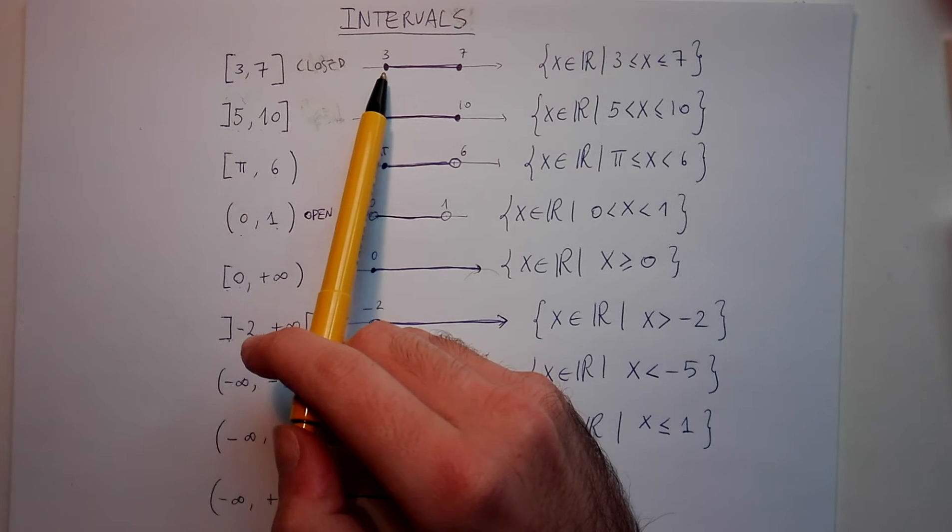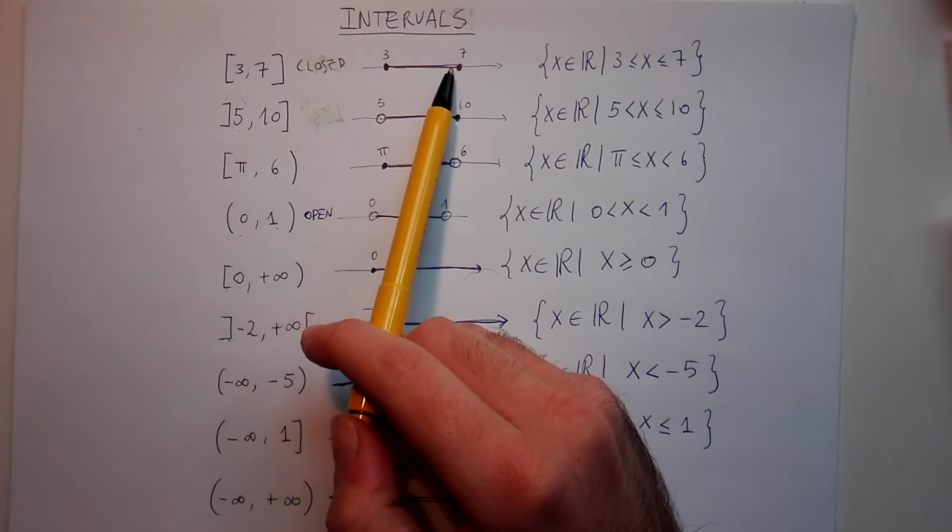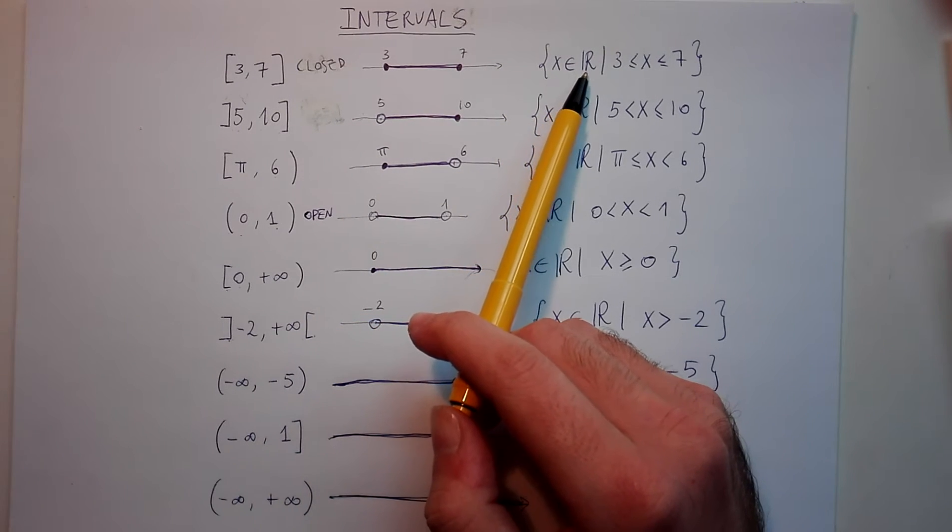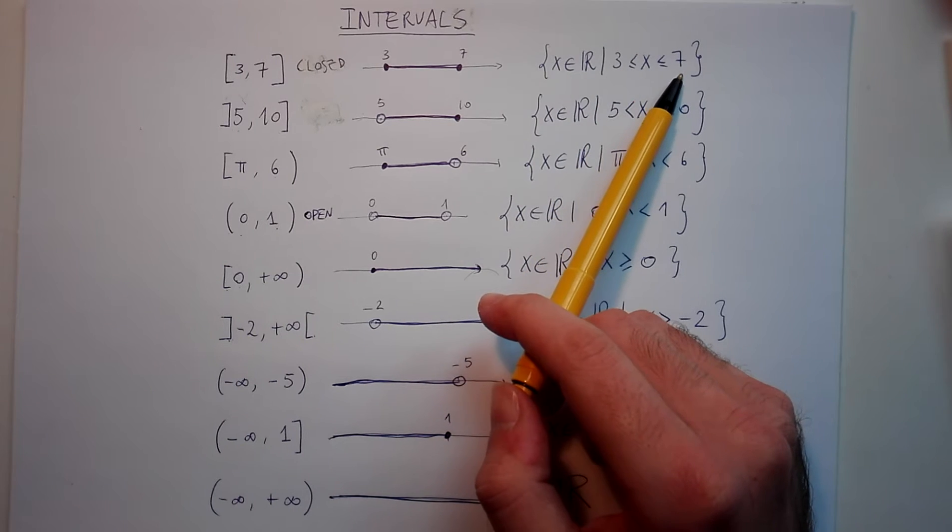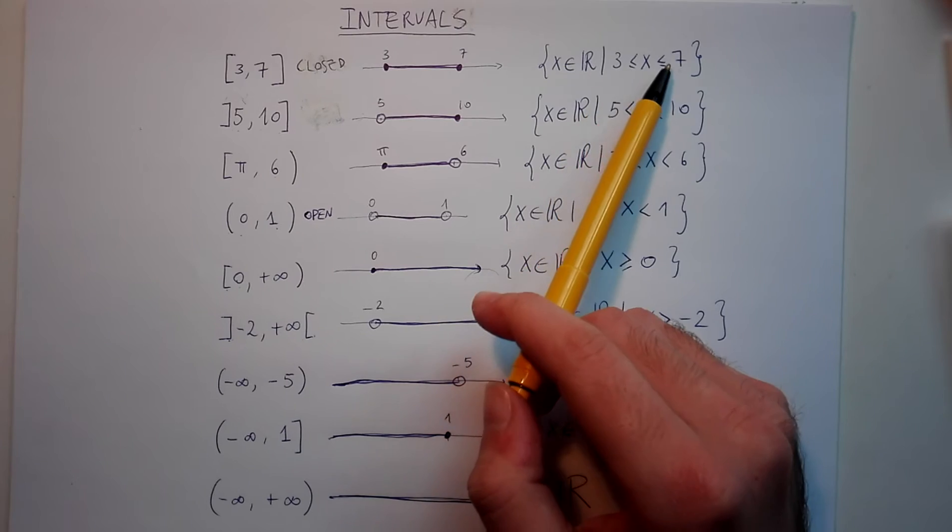I will write the fact that three is included with a solid ball here. So full ball, then solid line, and full ball again. This is just the set of all the real numbers between three and seven, sorry, including three and seven.